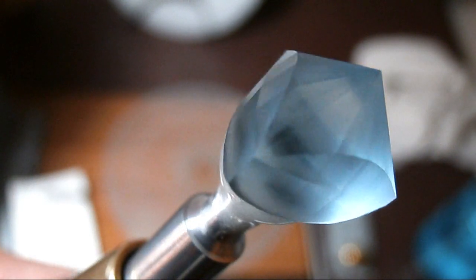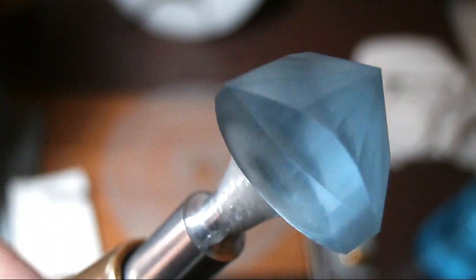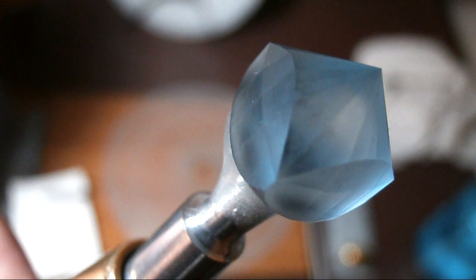So I'm building up really good facets on the pavilion, getting really good meet points. So next stage will be to polish the gem and then I'll move on to cutting the crown.